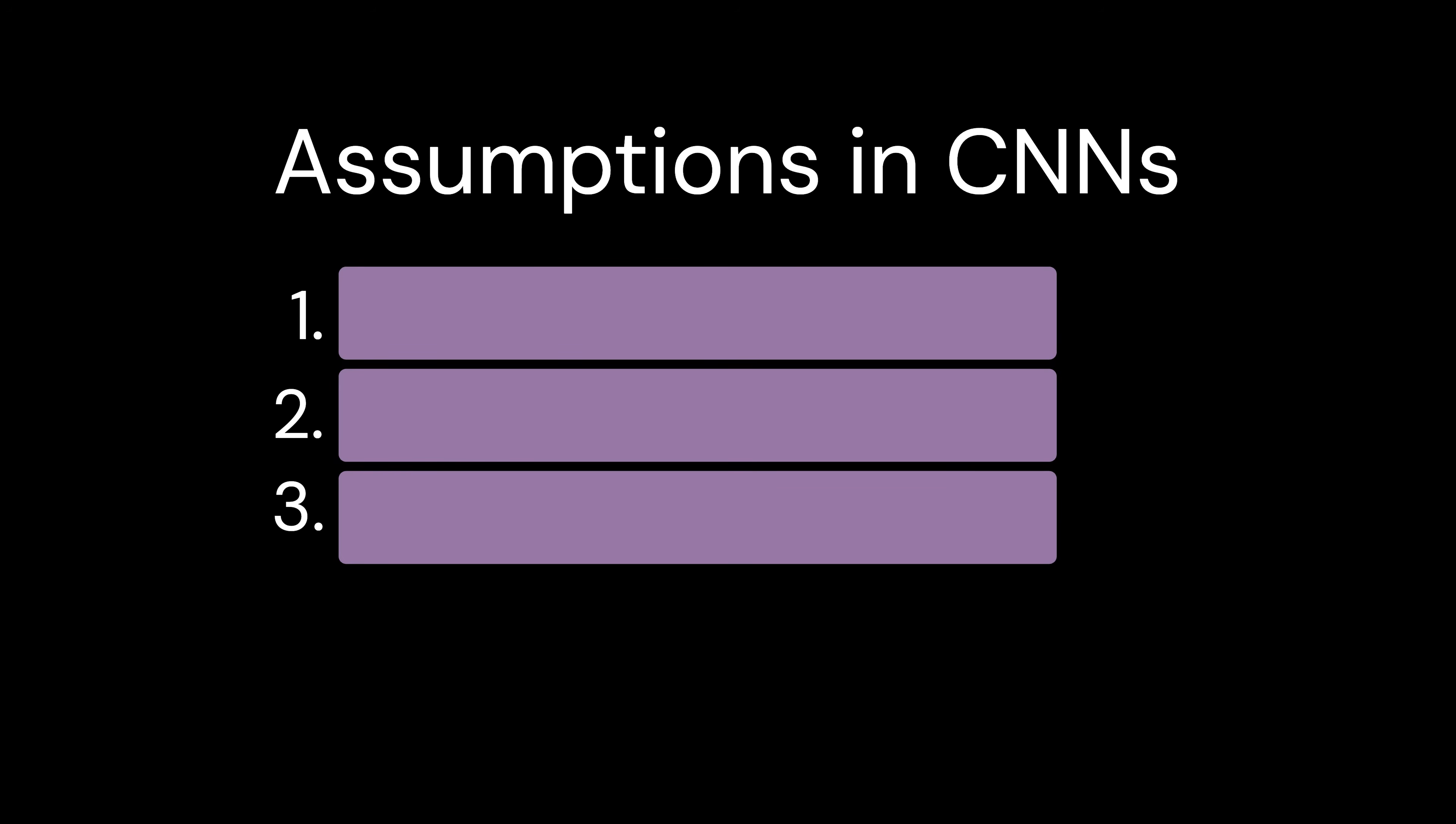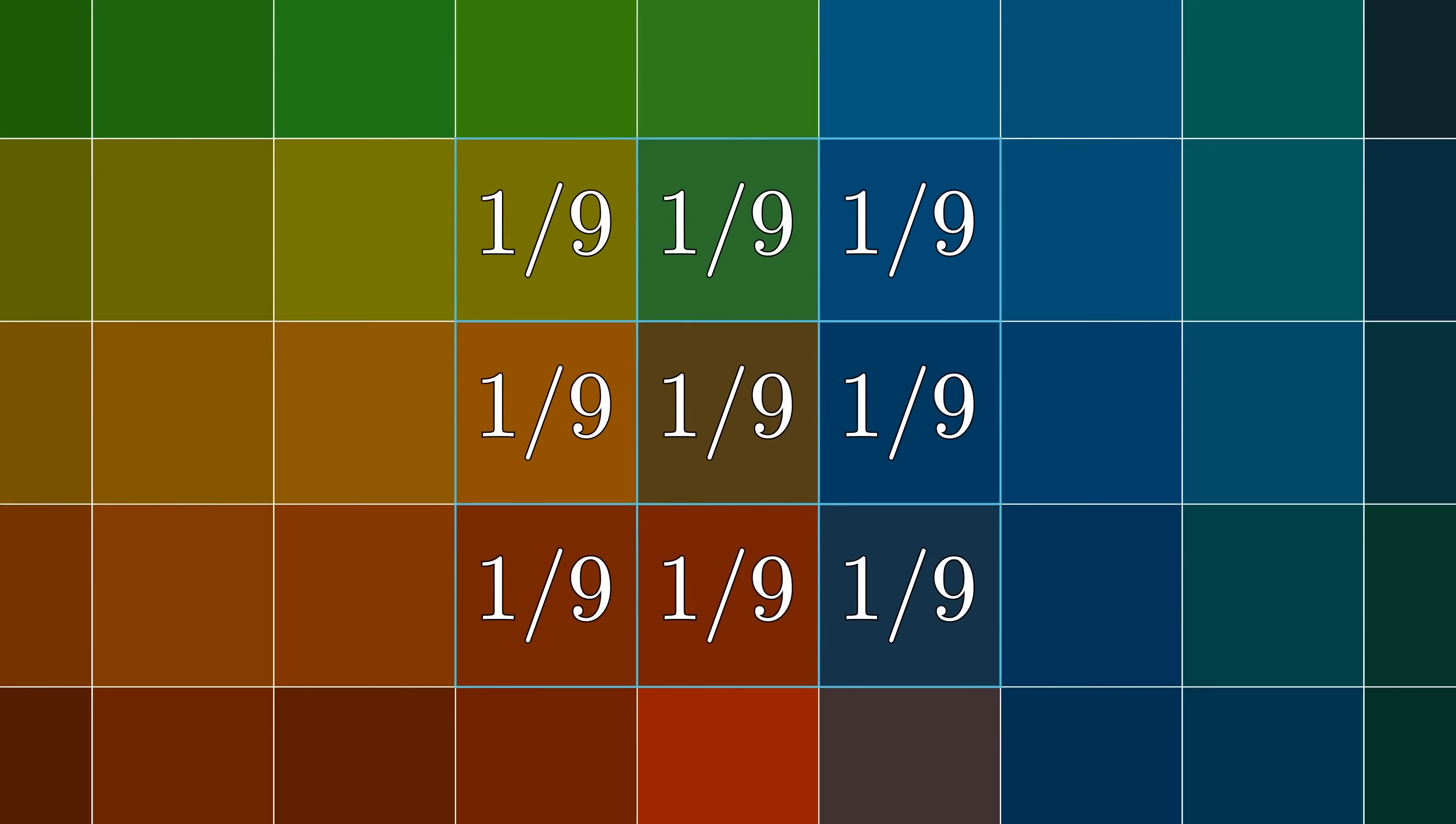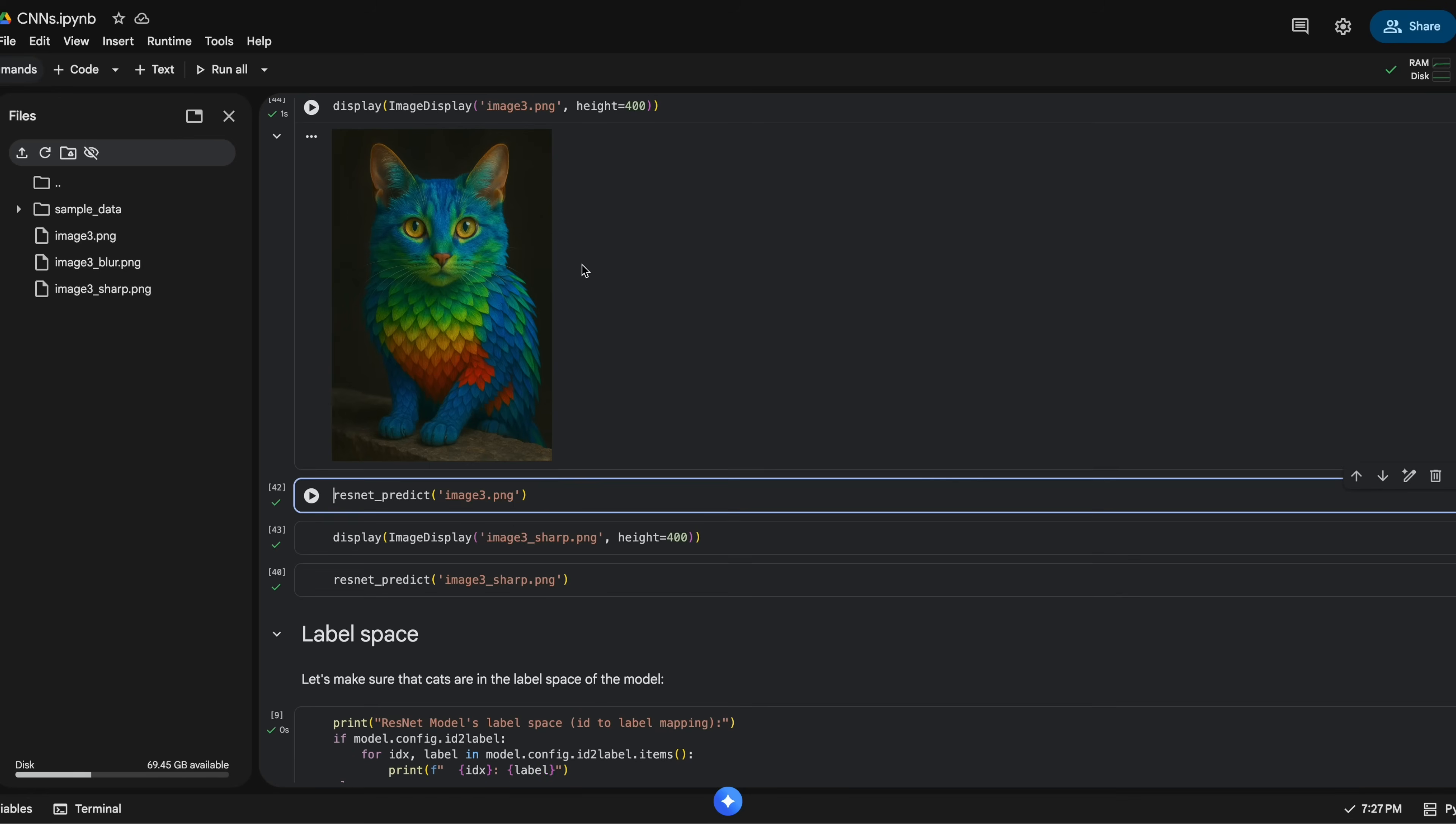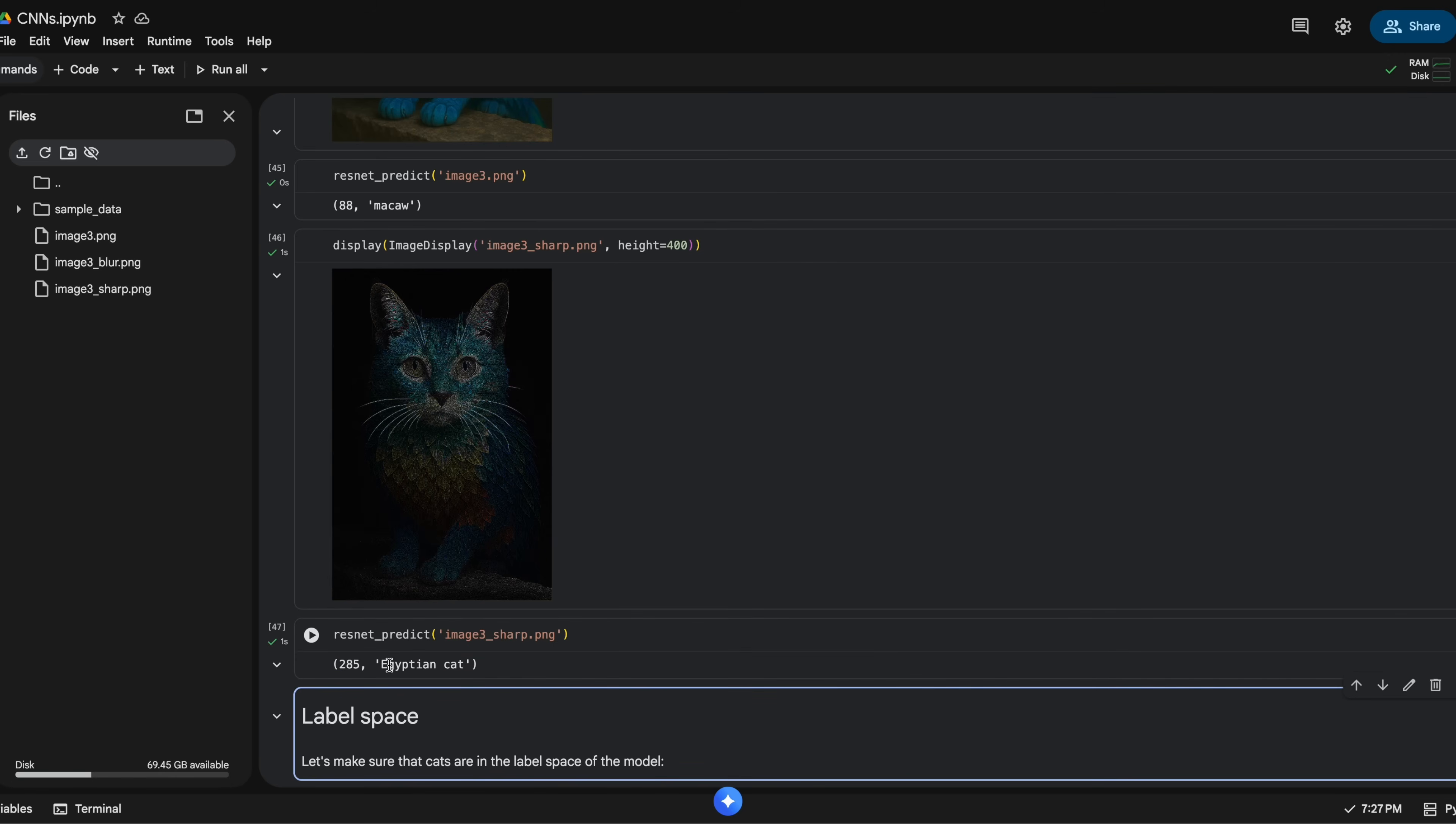CNNs make three main assumptions. The first one is locality. Remember, a small kernel slides across the image combining nearby pixels. Within a single convolutional layer, a pixel can only influence its local neighborhood. This is equivalent to having a very narrow receptive field. One implication of locality is that CNNs often prioritize texture over the overall object structure. So when presented with something like this, CNNs perceive the texture of the macaw feathers as a stronger signal than the outline of the cat. In fact, if I manipulate the image and reduce the details around the feathers, the CNN will change the initial label from macaw to cat.